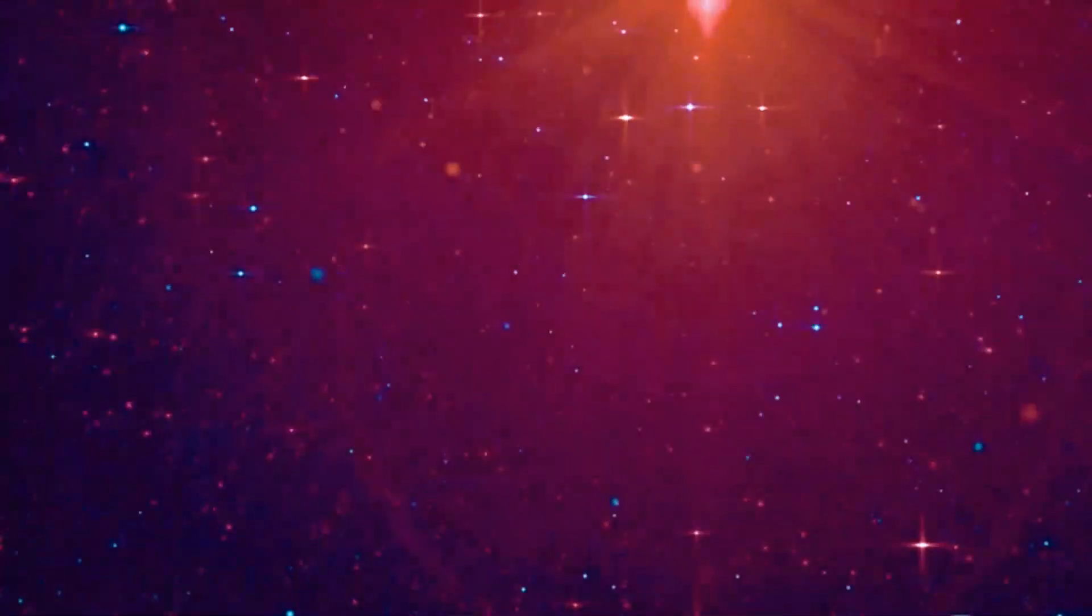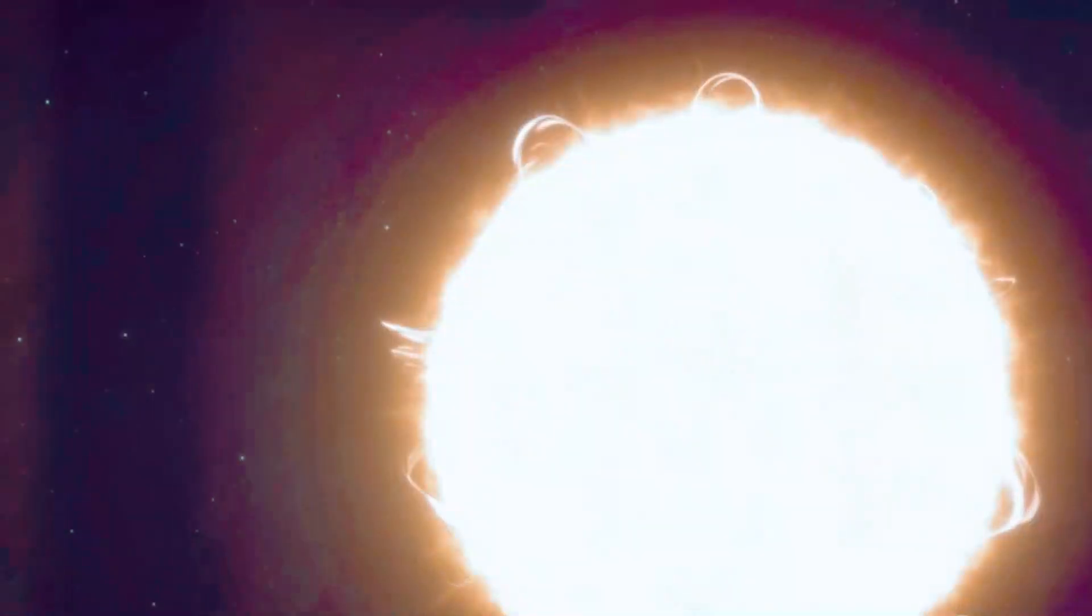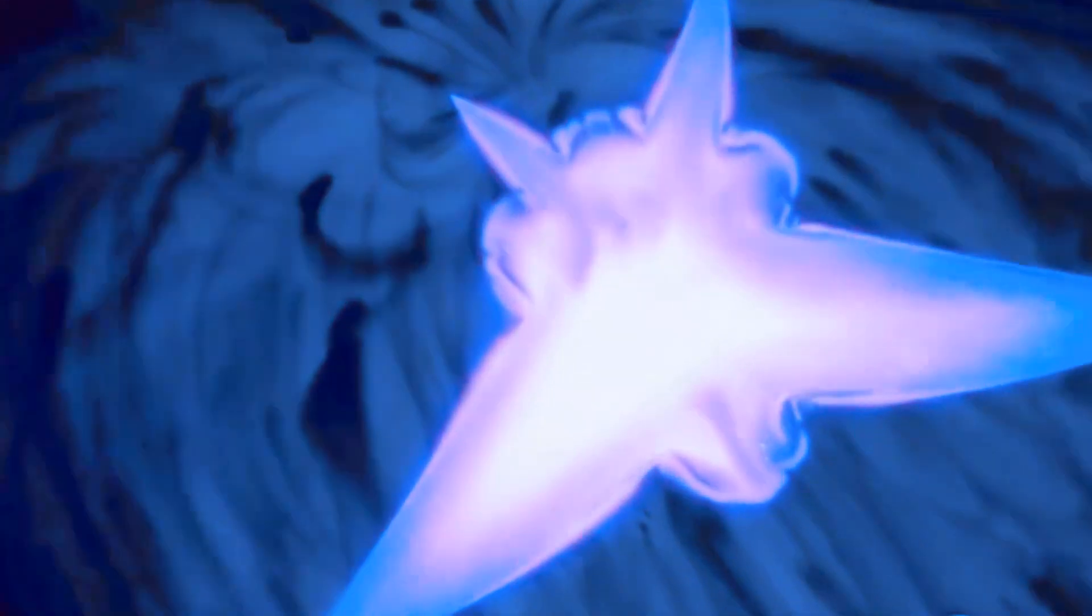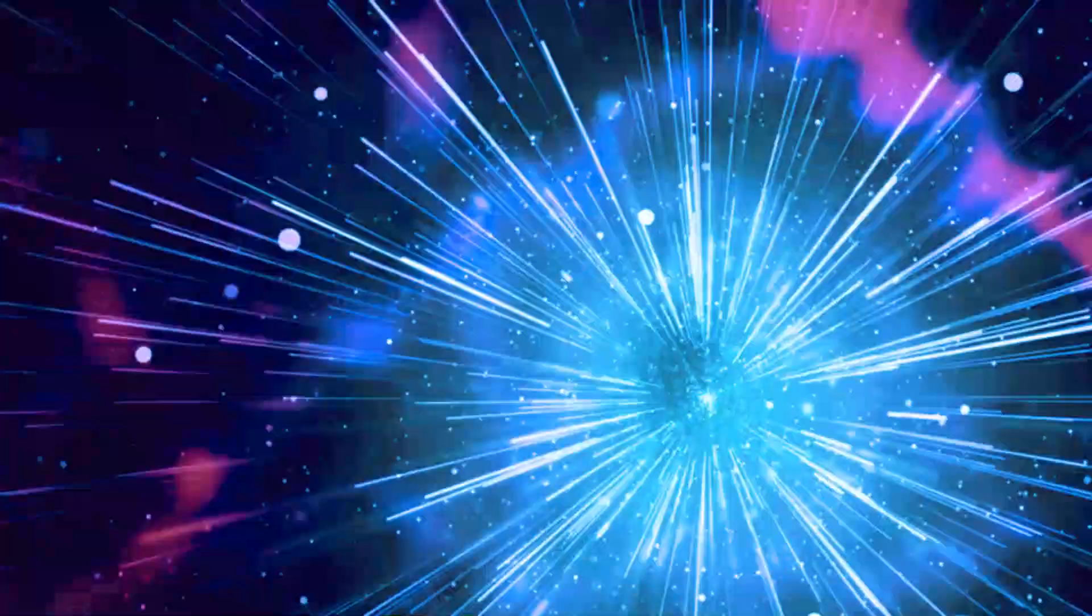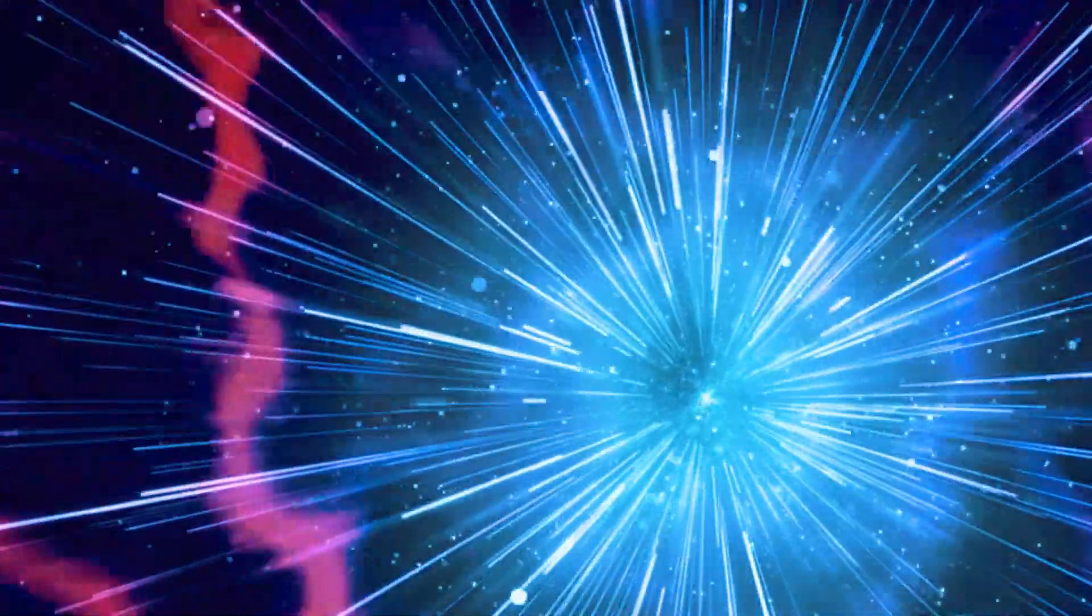Among this celestial tapestry lies a star that dwarfs all others in sheer size: UY Scuti. This red hypergiant star, located some 5,900 light years away in the constellation Scutum, holds the current title of the largest known star in the universe. UY Scuti belongs to a rare and fascinating class of stars known as red hypergiants. These stars represent the final stages of a star's life, a period characterized by immense size, incredible luminosity and relatively short life spans.